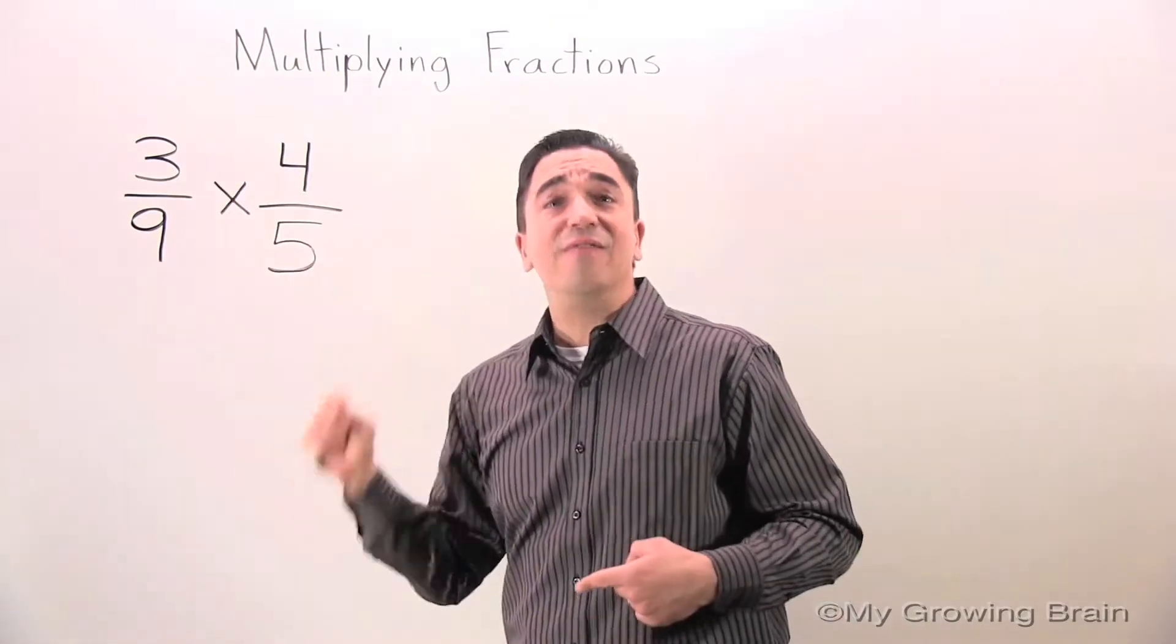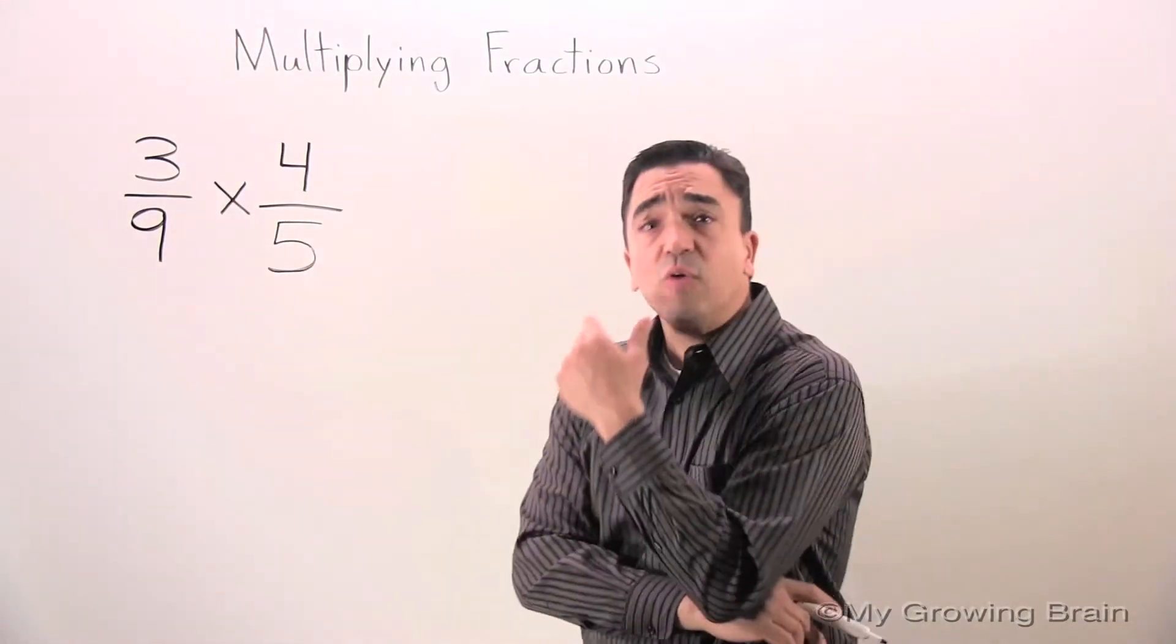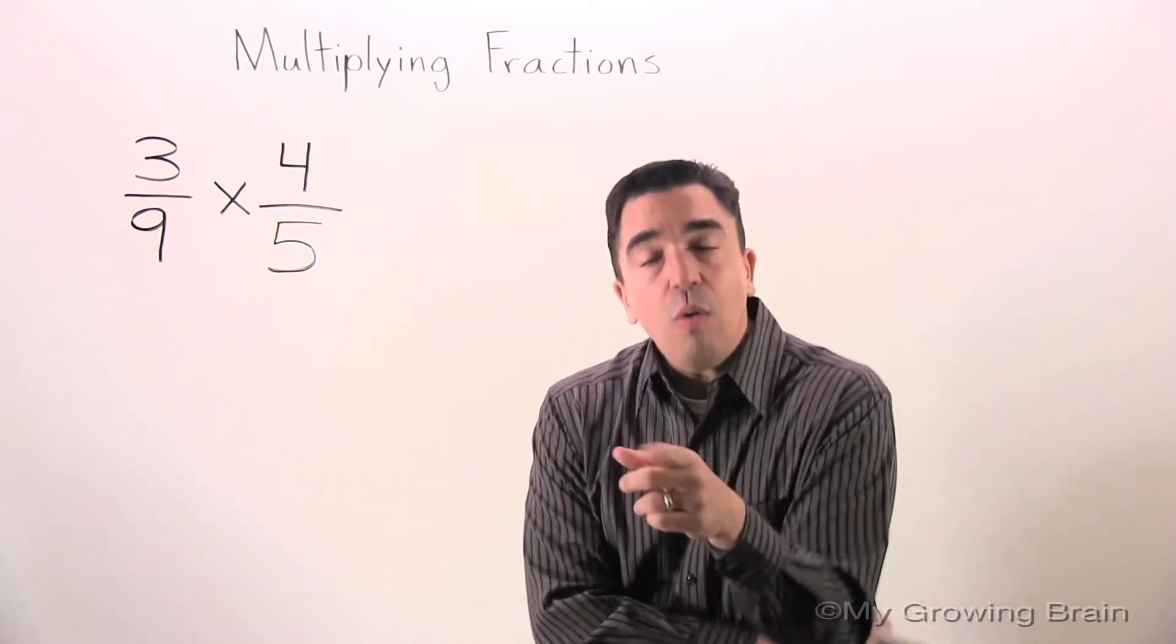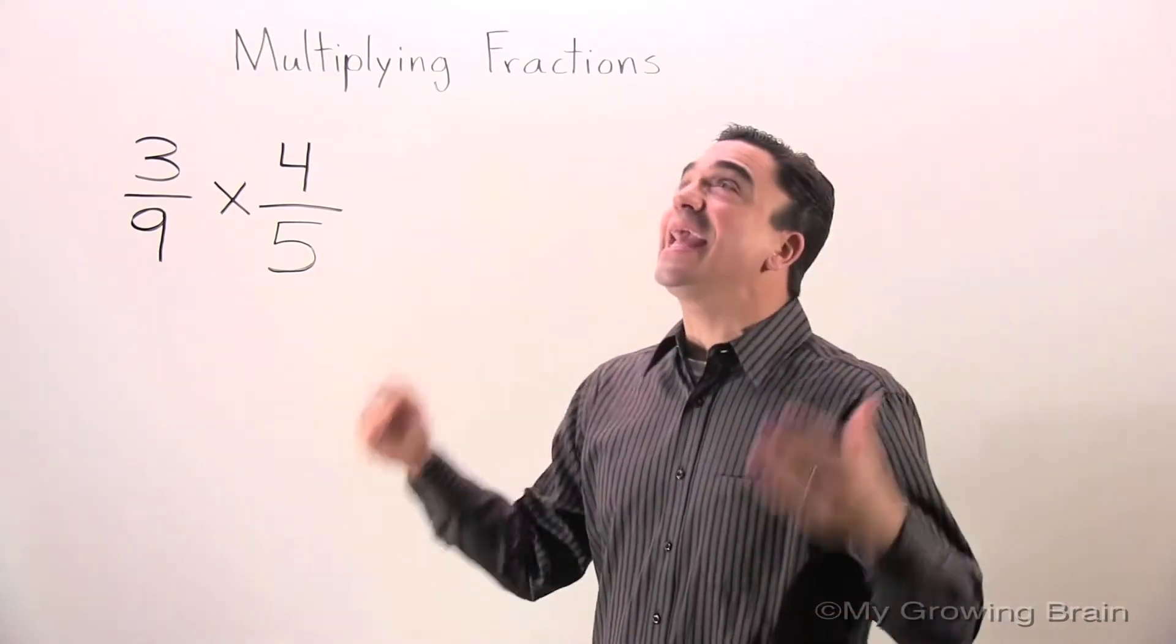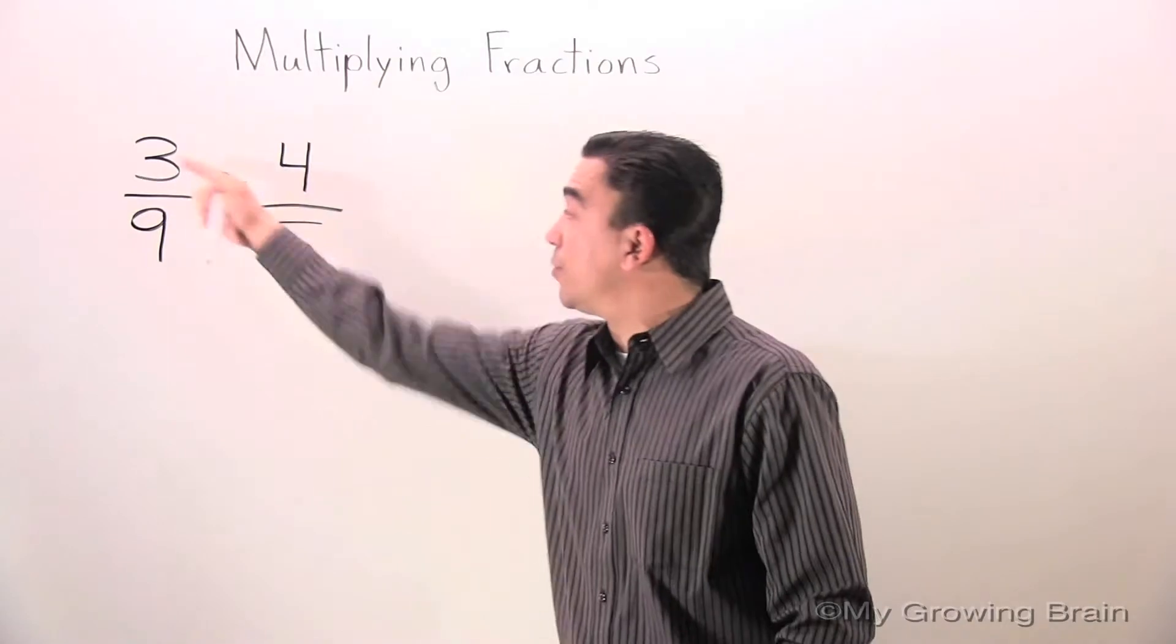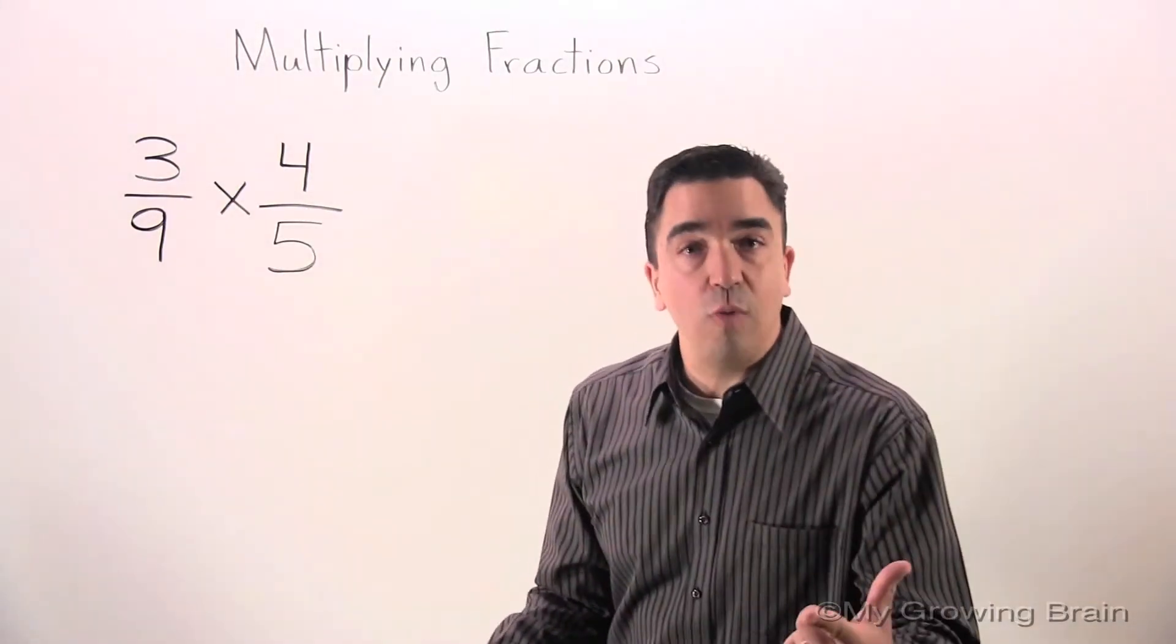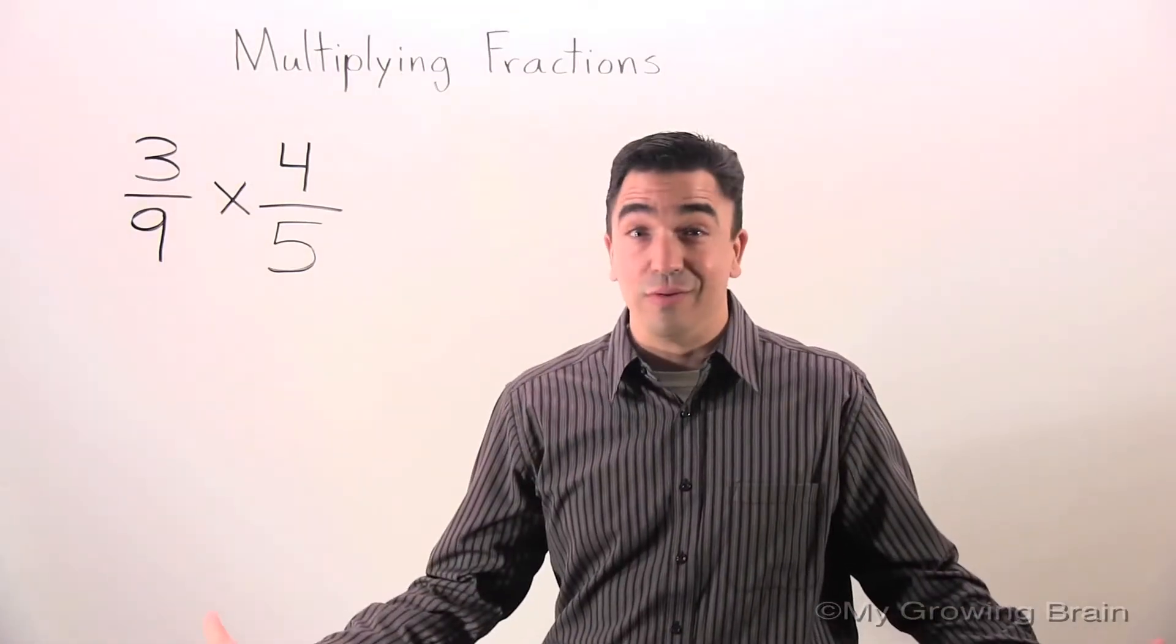Let's go to 3 and 5. Let's see if we can cross-cancel those two numbers. You know, once again, I can't think of a number that can go into 3 and 5 evenly that's greater than 1. So, I can't cross-cancel.